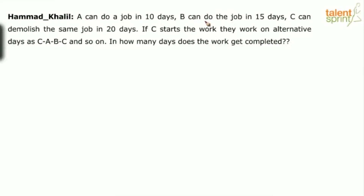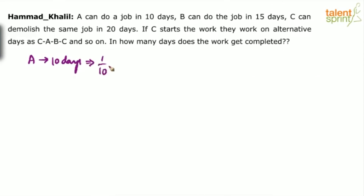A can do a job in 10 days, B can do the job in 15 days, C can demolish the same job in 20 days. If C starts the work, they work on alternative days as C, A, B, C and so on. So in how many days does the work get completed? Clearly, if A can do a job in 10 days, his capacity is 1/10 — he can do one-tenth of the work in one day. Similarly, B can do the job in 15 days, so B's capacity is 1/15.